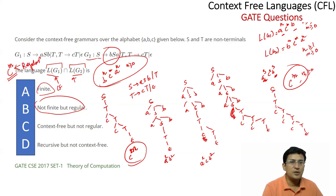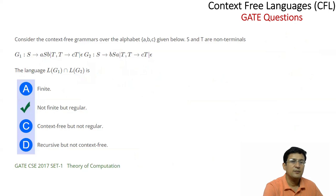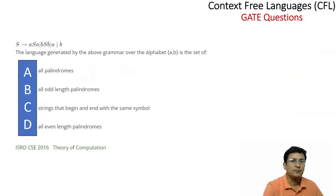So the intersection of L(G1) and L(G2) is not finite but it is regular, because it can be accepted by a finite automaton. This is the answer to this question.